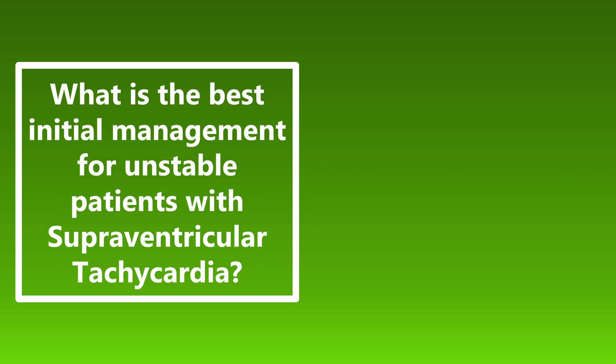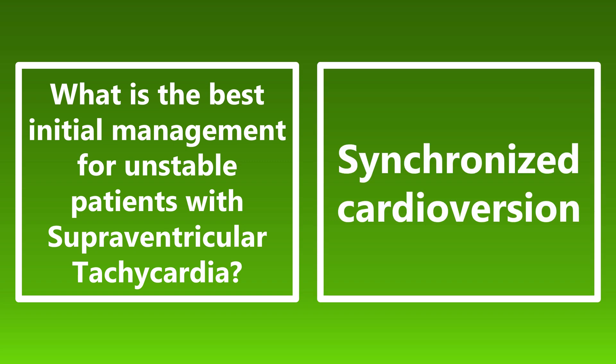What is the best initial management for unstable patients with supraventricular tachycardia? Best initial management for unstable SVT is synchronized cardioversion. For a stable patient with SVT, you can try vagal maneuvers or IV adenosine as the mainstay of treatment, but if the patient is unstable, skip all of that and go straight to synchronized cardioversion.